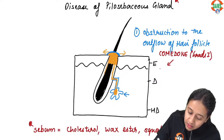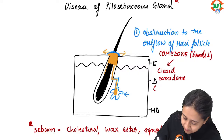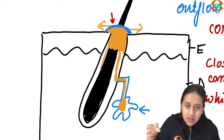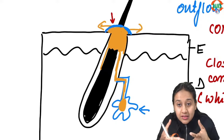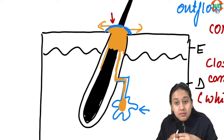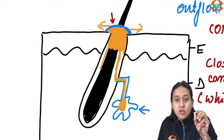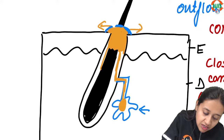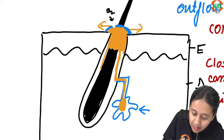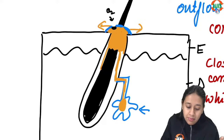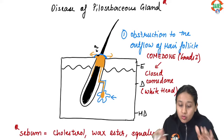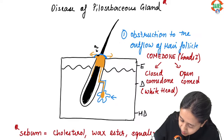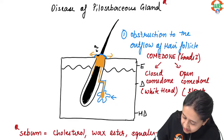There are two types of comedones. A closed comedone, also known as a whitehead, forms when the obstruction is completely closed — the sebum underneath appears white and shiny. An open comedone, or blackhead, has a small opening that allows air in, causing oxidation of the sebum and turning it black.